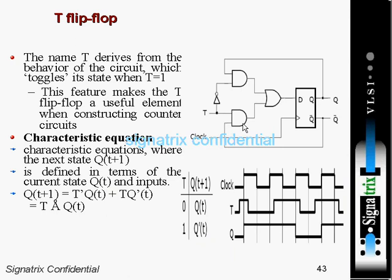Now coming to the T flip-flop. They are deriving the T flip-flop from the JK flip-flop. Here is the D flip-flop — they are converting it into a JK flip-flop by adding this circuit. Then they convert that into a T flip-flop by making a common input with the help of an inverter, giving a direct input for one and an inverted input for the other.